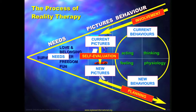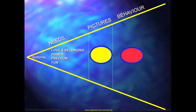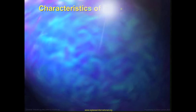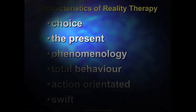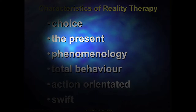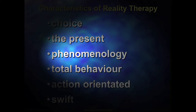Reality Therapy is very much about respecting the individual's choice and their control of themselves. We focus on two components: the pictures — what is it that you want? — and the behaviour — what is it that you are doing to achieve the pictures in your album? By focusing on that, we help the person focus on new pictures, new behaviours, and new choices. Reality Therapy is all about choice; we use the language of choice. It's about the present, because we believe the past only exists in present pictures and memories, not in the reality of the past. It is phenomenological — about how the client sees things, not how the therapist sees them.